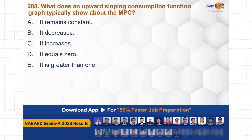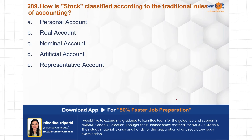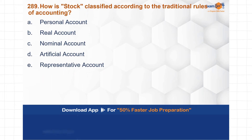Next question: what does an upward sloping consumption function graph typically show about the MPC? MPC is Marginal Propensity to Consume. An upward sloping consumption function shows that MPC remains constant. A is the correct choice — an upward sloping consumption function graph where the slope remains constant indicates that MPC is constant across different levels of income.